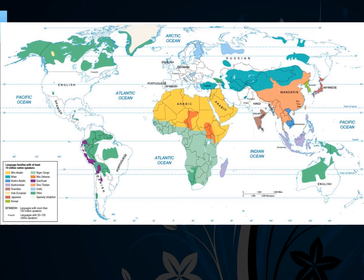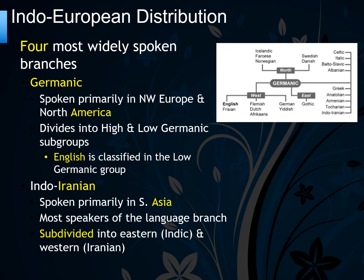You should know this map in terms of both languages and language families and where they are found. The language family you need to know most about is Indo-European. You should also know the four major branches — the first is the Germanic branch, primarily spoken in northwestern Europe and North America.